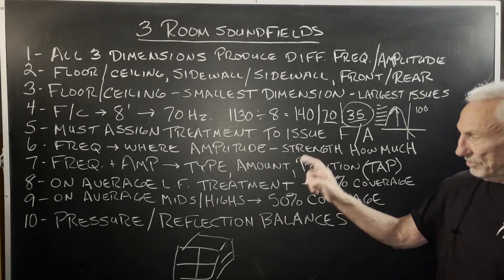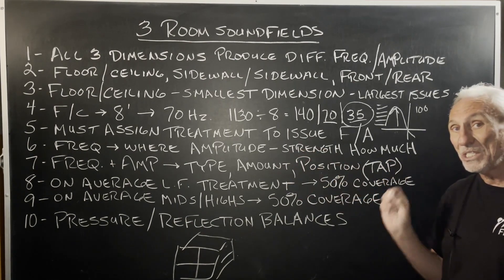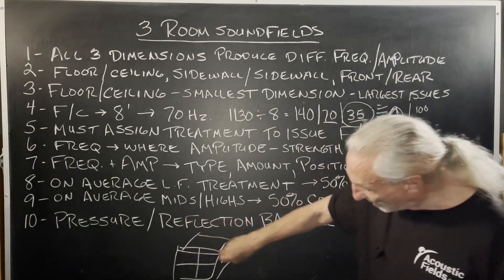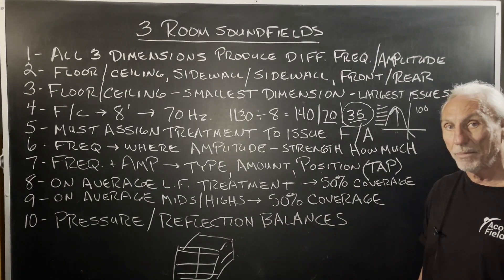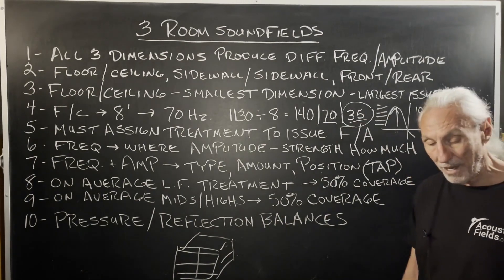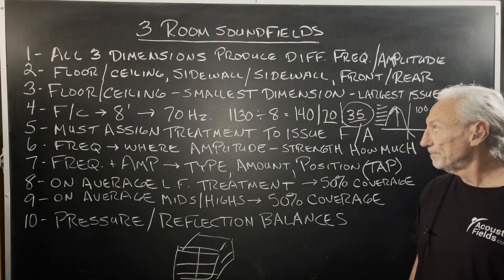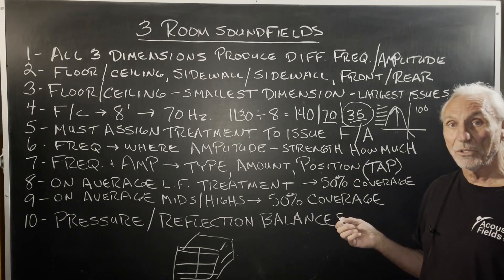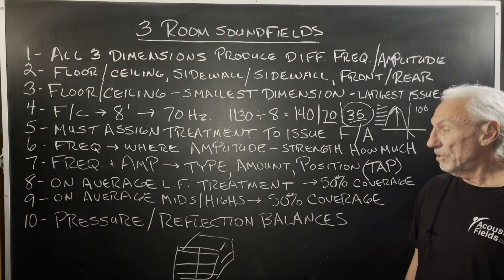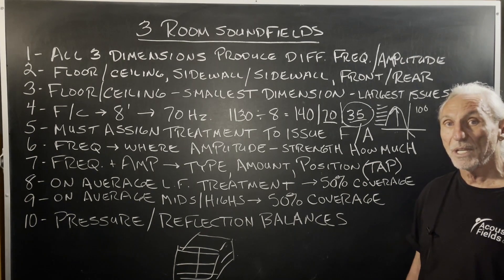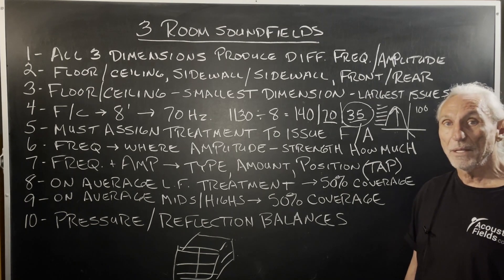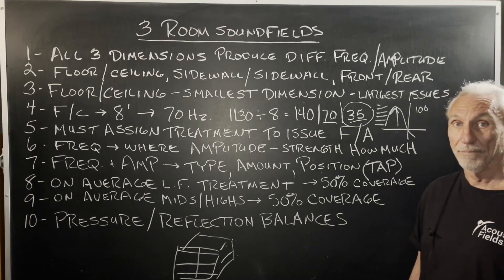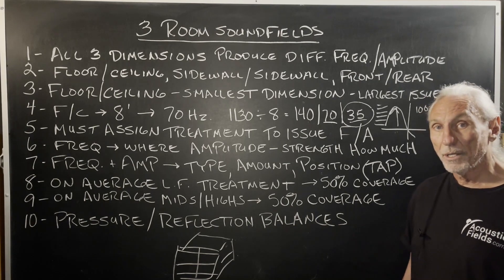Frequency and amplitude determine the type, amount, and positioning of treatment, because we have these three sound fields. If we have a 70 cycle problem floor to ceiling, we treat either the floor or the ceiling with the proper treatment — sometimes we have to go to the ceiling. If a client wants to get down to the 35 cycle area for floor to ceiling, as in mastering rooms, we use our platforms, because the lower you go in frequency, the heavier the technology required. We've suspended our carbon technology over the DAW and listening positions, but at 140 pounds a piece, you want to be very careful with installation — if one of these panels falls, it's dangerous. The platforms go on the floor — nothing's going to fall there.